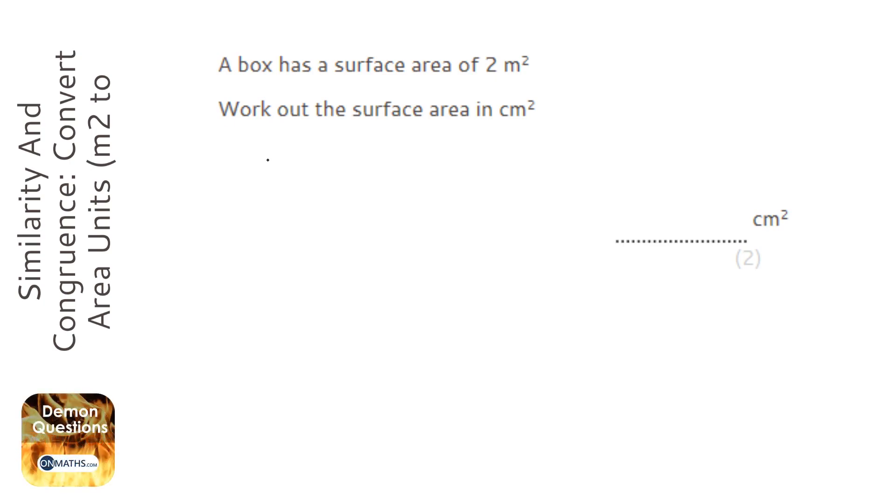However, to get from metres to centimetres we do indeed times by 100. But to get from metres squared to centimetres squared you need to times by 100 per dimension. And because it's an area it's going to be two dimensions.